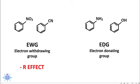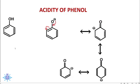Now let us learn about the acidity of phenol. When phenol releases an H⁺ ion, it forms the phenoxide anion. This phenoxide anion is stabilized by resonance. The double bond breaks, the single bond becomes a double bond, and the negative charge is delocalized to different ring carbons through successive resonating forms. This delocalization through resonance determines the acidity of phenol.